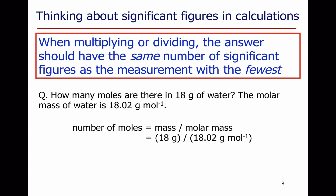When combining measurements by multiplying or dividing, the answer should have the same number of significant figures as the measurement with the fewest. For example: how many moles are in 18 grams of water, given the molar mass of water is 18.02 g/mol? Moles = mass ÷ molar mass = 18 ÷ 18.02. The 18 is known to two significant figures and 18.02 to four, so the answer must be written to two significant figures. The calculator result rounds to 1.0 — and that trailing zero after the decimal point is significant, confirming two significant figures.